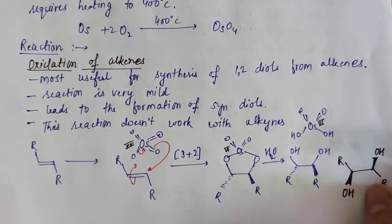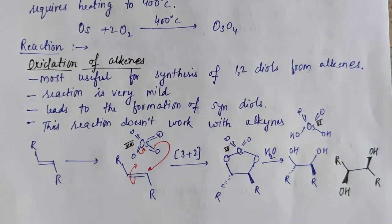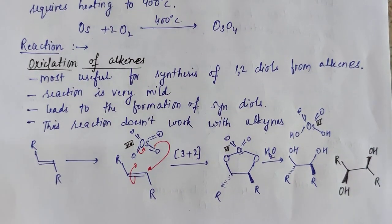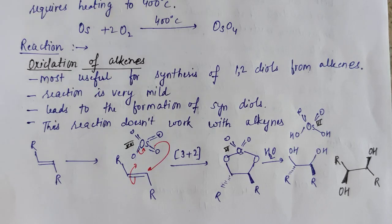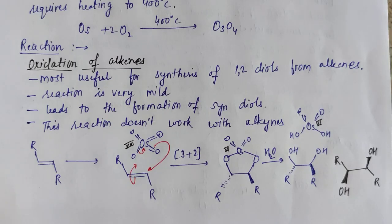The reaction is oxidation of an alkene to synthesize 1,2-diol, also called vicinal diol. This is a very mild reaction — you do not need to provide very critical conditions; it undergoes under mild conditions and leads to formation of a syn-diol, meaning both hydroxy groups are added from the same side, either from above the plane or below the plane. This reaction does not occur with alkynes.